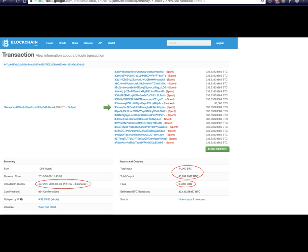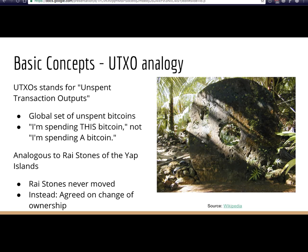When you spend Bitcoin, you're spending a specific Bitcoin — not just deducting from an account. This is analogous to the Rai stones of the Yap Islands: giant stones scattered around the island that everyone knew about. Instead of moving the stones, they just agreed on who owned them. Similarly in Bitcoin, when you spend, you say 'this Bitcoin now belongs to you.' There's a giant repository of Bitcoins — the UTXO set, or unspent transaction outputs — and everyone agrees on who owns what.